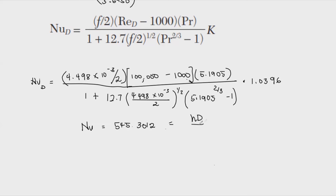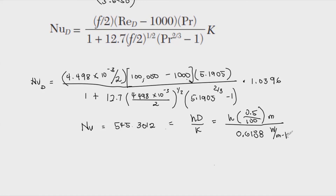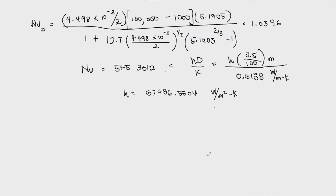Since Nu_D = H·D/k, we solve for H: H = Nu_D × k_b / D = 545.3012 × 0.6188 / (0.5 × 0.01) = 67,486.5504 W/(m²·K). This high convective heat transfer coefficient is expected for liquid flow inside a pipe.